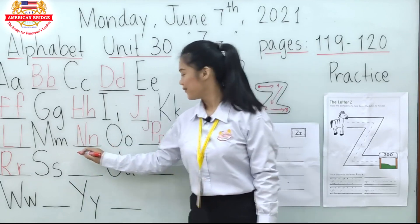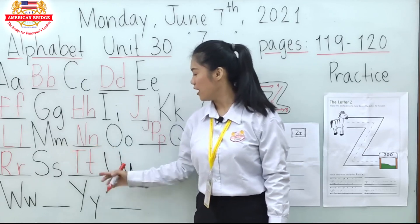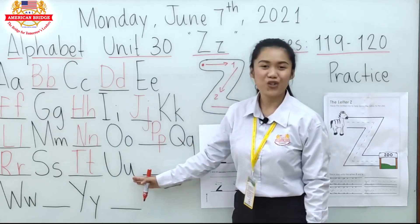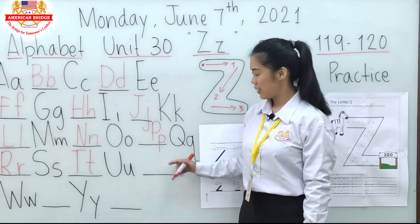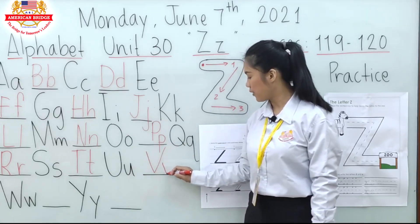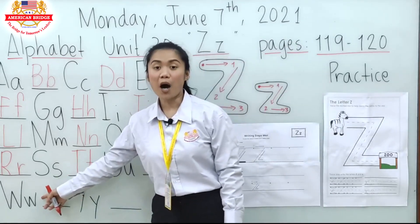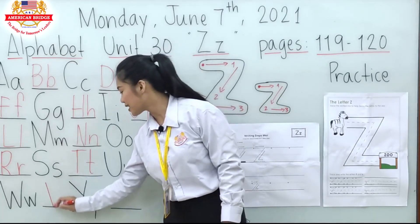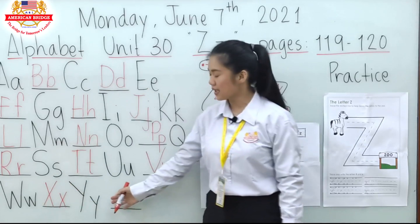How about the missing letter here? Letter T — very good! Capital T and small letter T. Next is Letter U. How about the missing letter? Letter V — very good everyone! Write capital V and small letter V. Next is Letter W. How about the missing letter? Letter X — that's right! Capital X and small letter X.